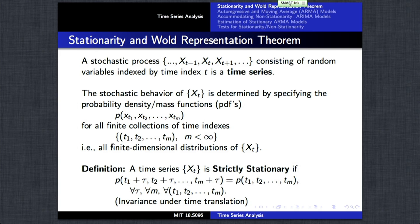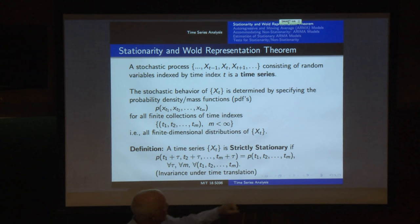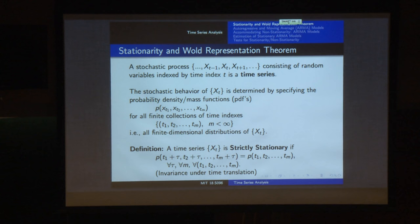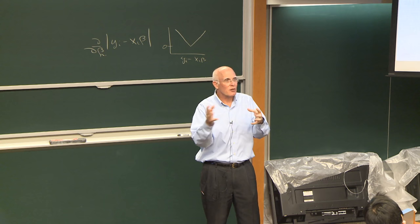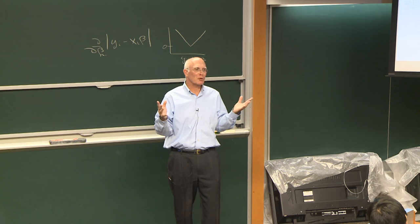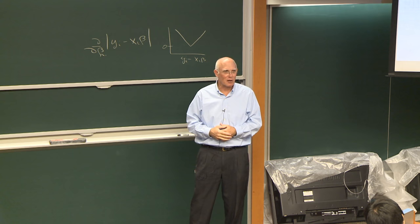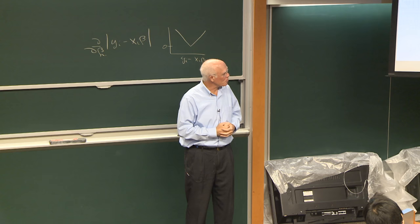A stochastic process is strictly stationary if the density function for any collection of times T1 through Tm equals the density function for a tau-translation of that — so the finite dimensional distributions are constant under arbitrary translations. That's a strong but reasonable property for statistical modeling. When estimating models, you want to estimate things that are constant; parameters of models are constant, so we want the underlying distributional structure to be the same.